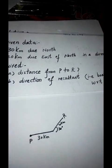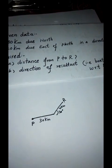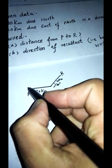The required is the distance from P to R, the distance covered by the boat, and the direction of the resultant, i.e., the board's direction with respect to the port.